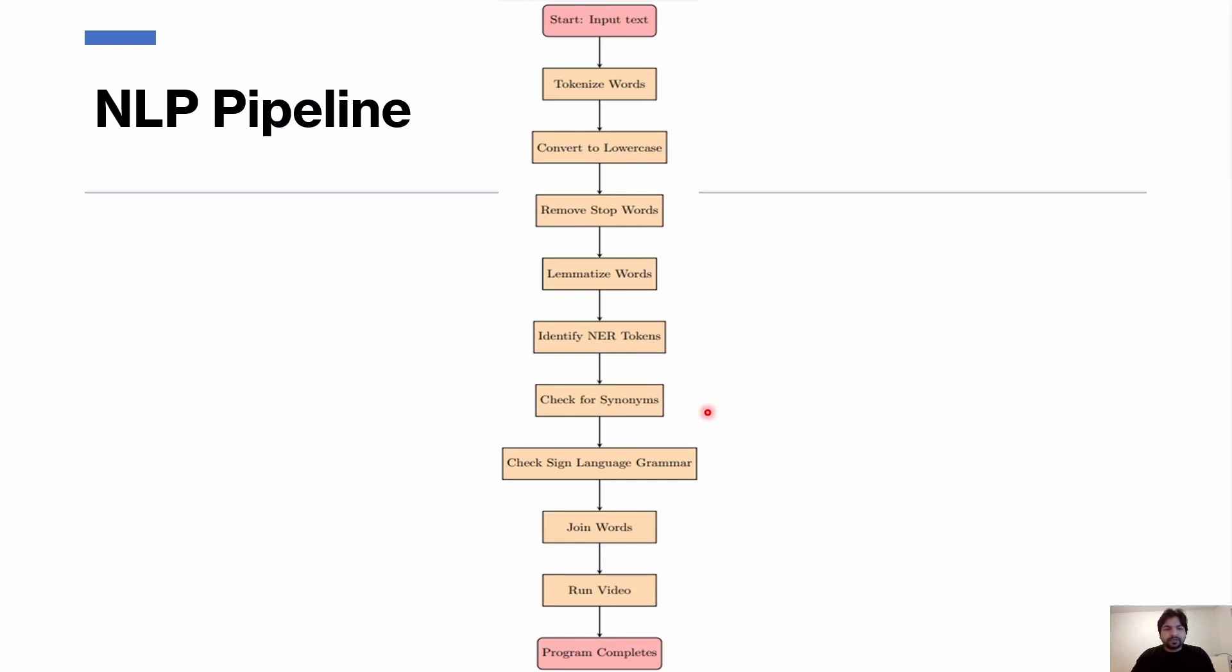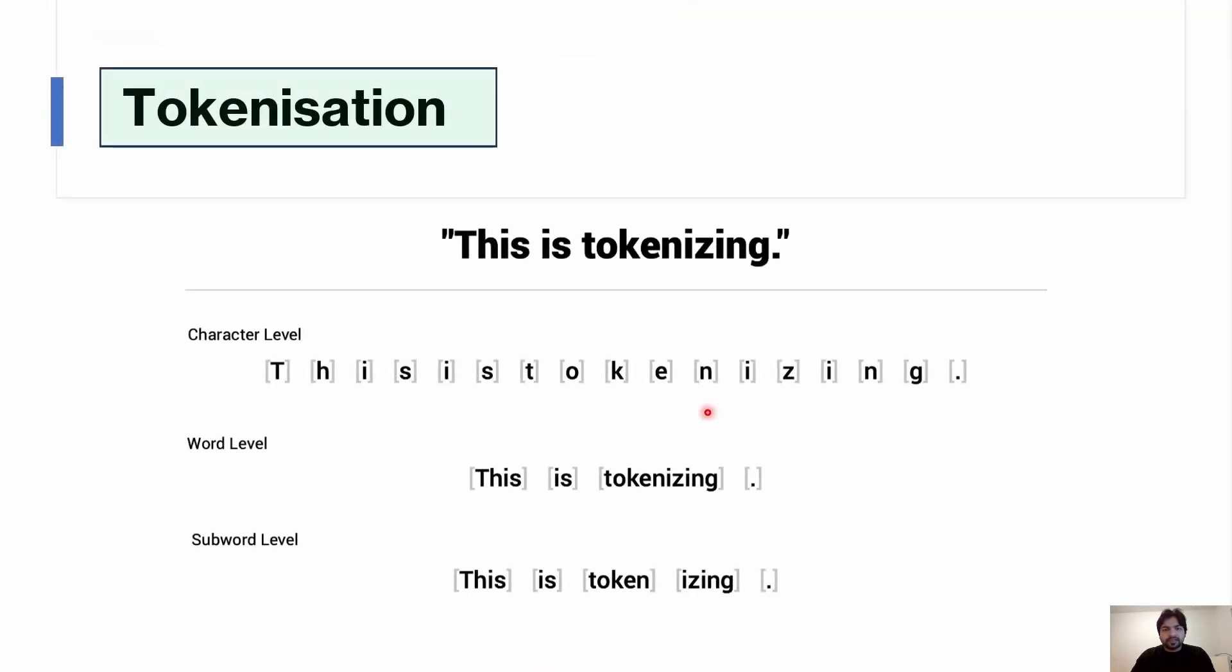This is the NLP pipeline which I used for making this project. First is the input text, then tokenization of the words. Tokenization is a process of breaking up a given text into units called tokens. It's like breaking down a sentence into smaller pieces. So tokenization splits the text into individual words or smaller parts like punctuation marks. This process helps computers understand and analyze language more easily, making tasks like language processing and analysis much more manageable.